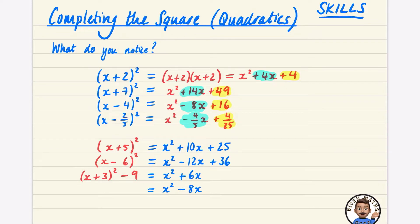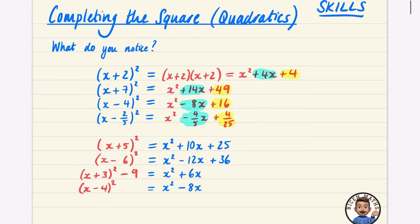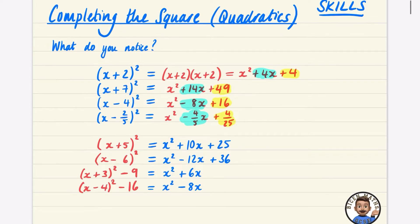You can verify by expanding: x plus 3 squared minus 9 gives x squared plus 6x plus 9 minus 9, which is just x squared plus 6x. The next example works the same way — we halve the coefficient to get x minus 4 squared, and since that would introduce an extra plus 16, we subtract it. These four examples are all instances of completing the square.